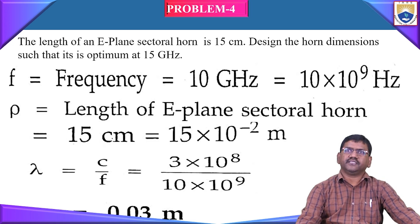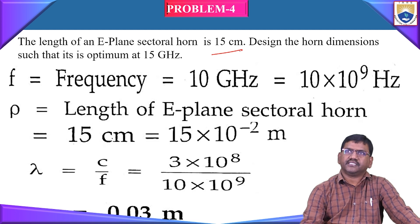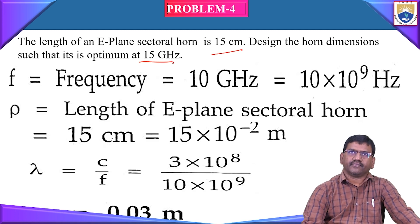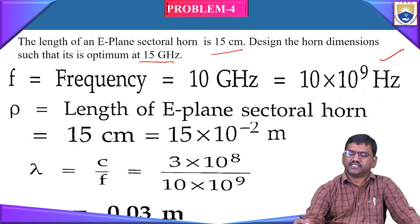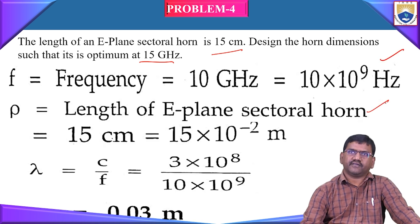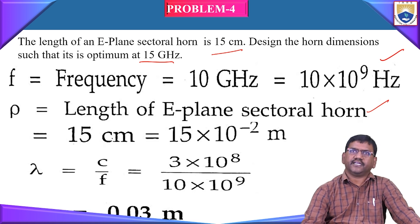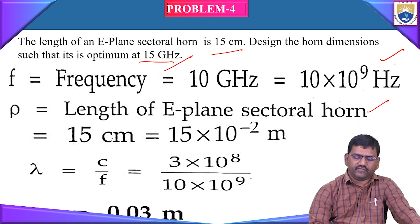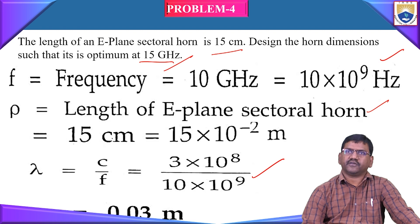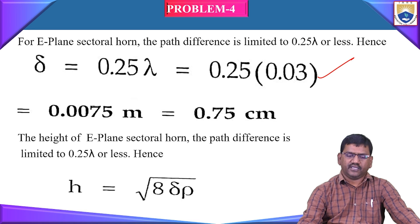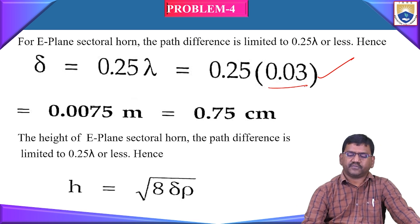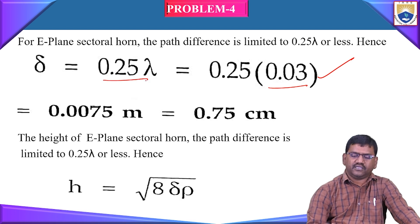The last problem: the length of the H-plane sectoral horn is given as 15 centimeters. Design the horn dimensions such that it is optimum. The frequency is given as 10 GHz. Rho = 15 × 10⁻² meters. The frequency is 15 GHz, so lambda = c/f = 3 × 10⁸ / (10 × 10⁹) = 0.03 meters. For the H-plane sectoral horn, the path difference delta = 0.25 lambda = 0.25 × 0.03 = 0.0075 meters = 0.75 centimeters.